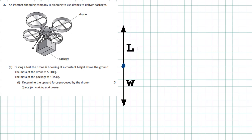From the diagram, no unbalanced force acting on the drone and package means the weight is counteracted by the lift acting upwards, and both have the same magnitude. The unbalanced force is equal to zero, so we can say the lift force acting upwards is equal to the weight acting downwards. Now we know how to calculate the weight of an object.